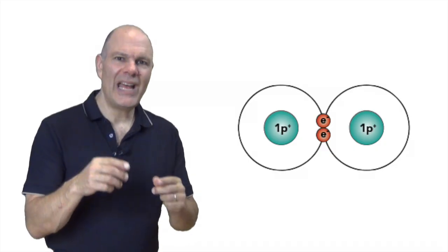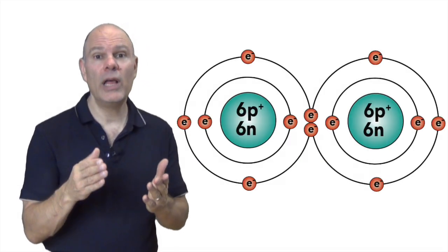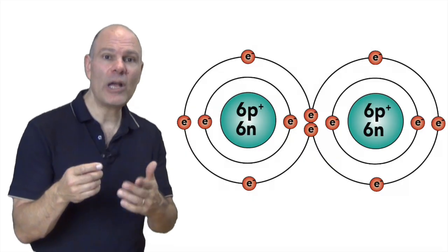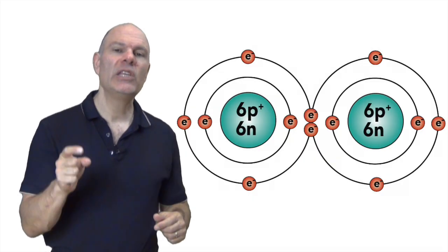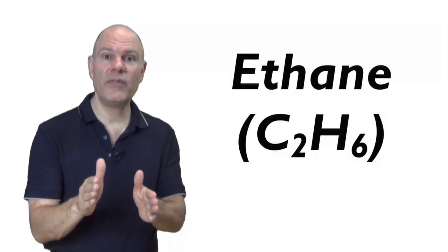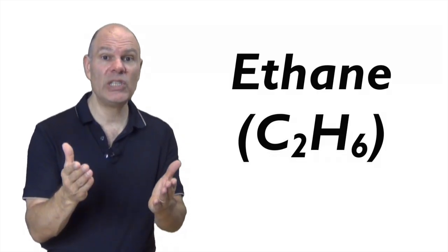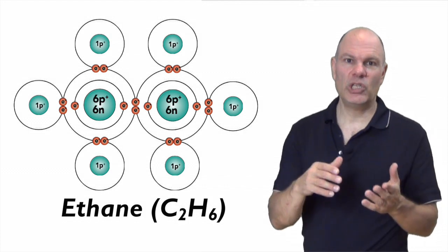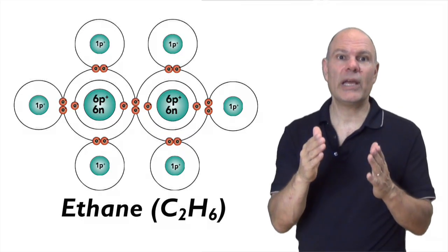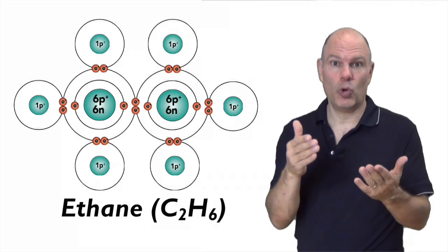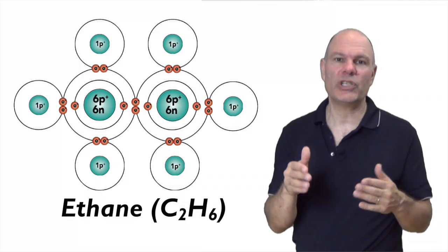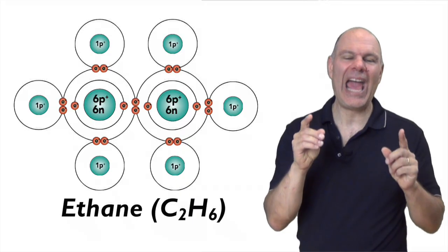Hydrogen can share electrons with itself, and carbon can do the same — which is critically important for the molecules of life. Here's the challenge: figure out how to draw ethane, C2H6, another kind of natural gas. In ethane, each carbon is bonded to three hydrogens, and the two carbons are bonded to one another. Each hydrogen has two electrons in its outer shell, and each carbon has eight. One molecule, eight happy atoms.